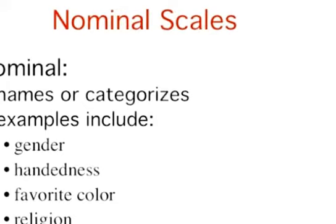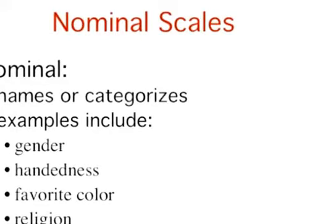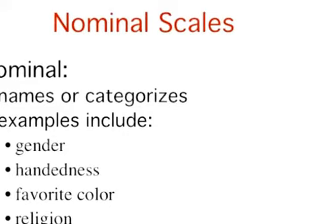When measuring using a nominal scale, one simply names or categorizes responses. Gender, handedness, favorite color, and religion are examples of variables measured on a nominal scale. The essential point about nominal scales is that they do not imply any ordering among the responses. For example, when classifying people according to their favorite color, there is no sense in which green is placed ahead of blue. Responses are merely categorized. Nominal scales embody the lowest level of measurement.